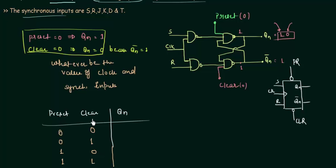When preset is 0, clear is 0, it means there is a contradiction. You can see from here when preset is 0, QN is 1, and when clear is 0, QN is 0. So at the same time they are compelling the QN to become 1 and 0. Therefore it is not used.